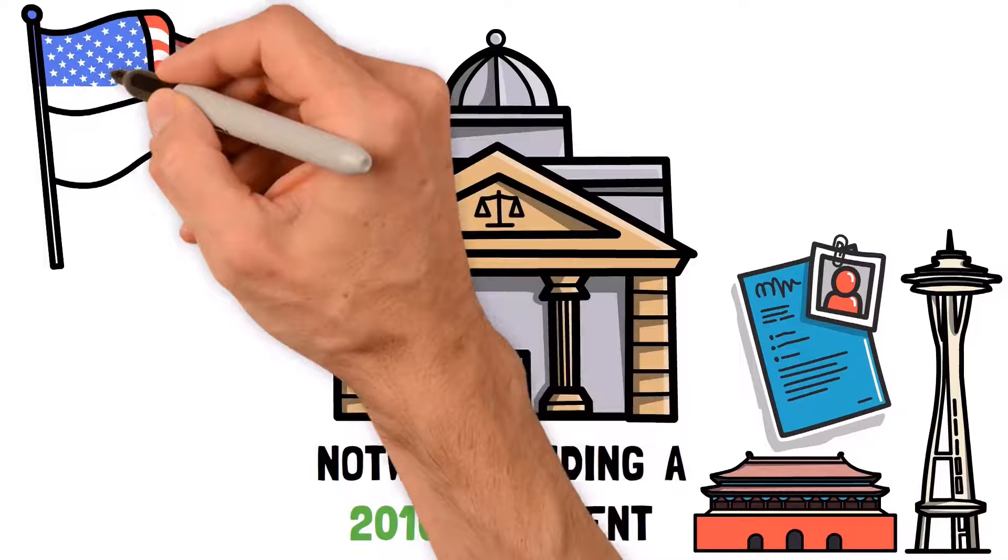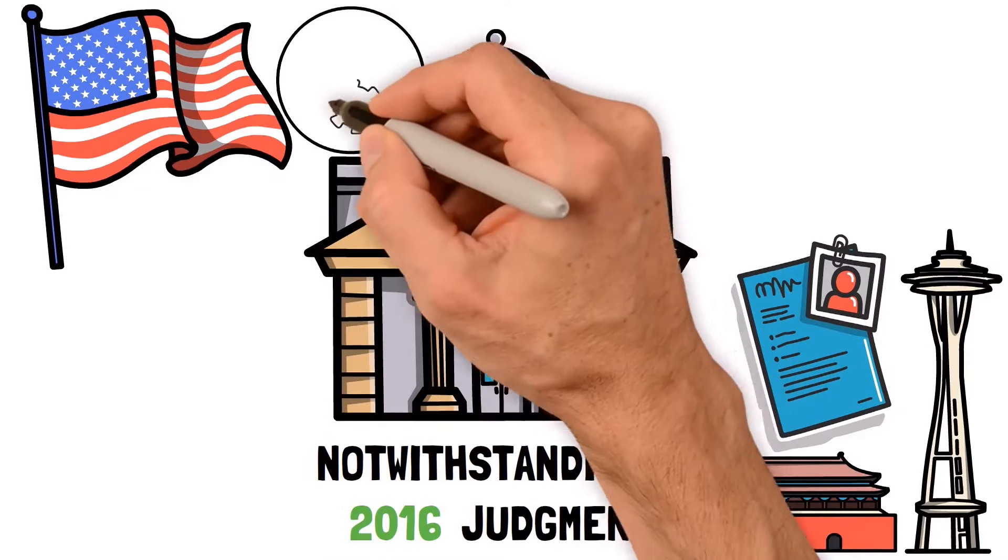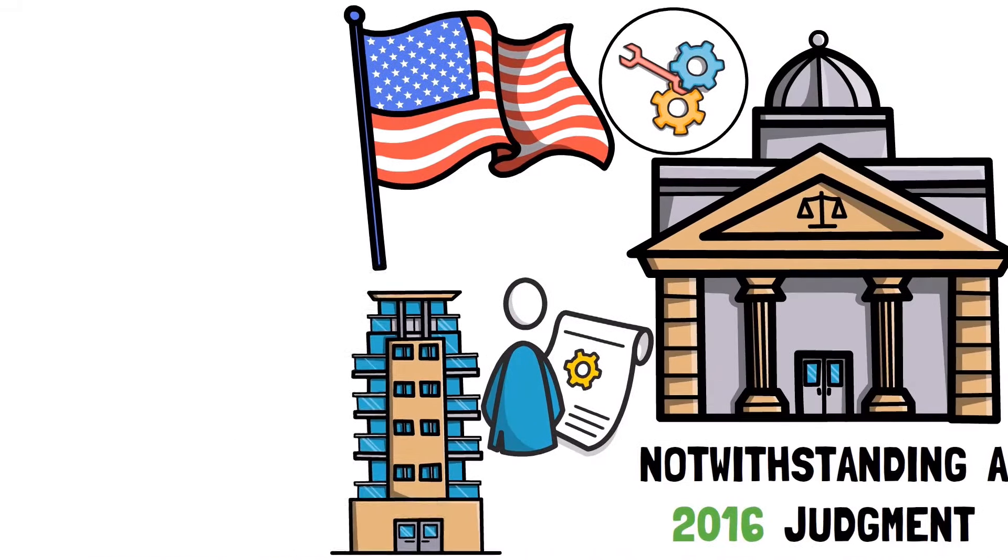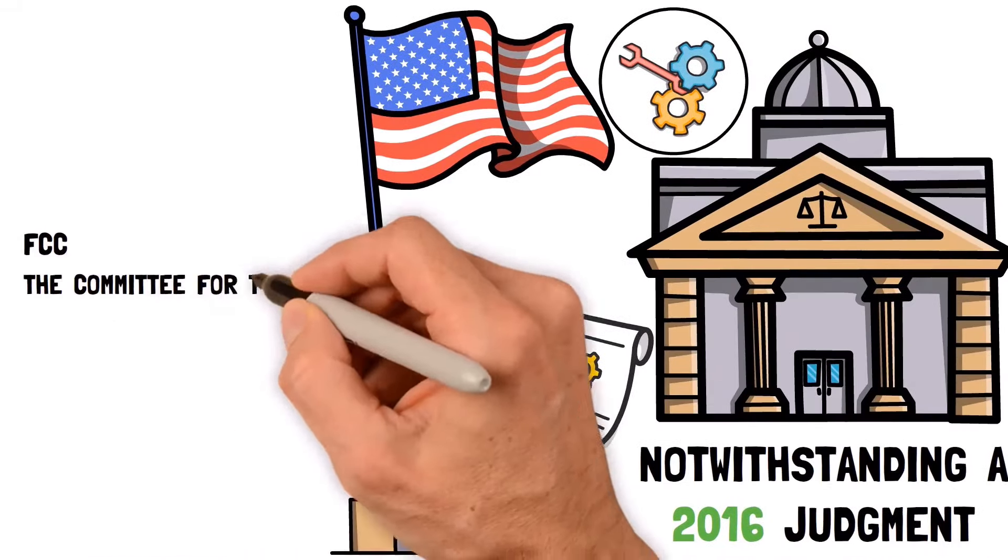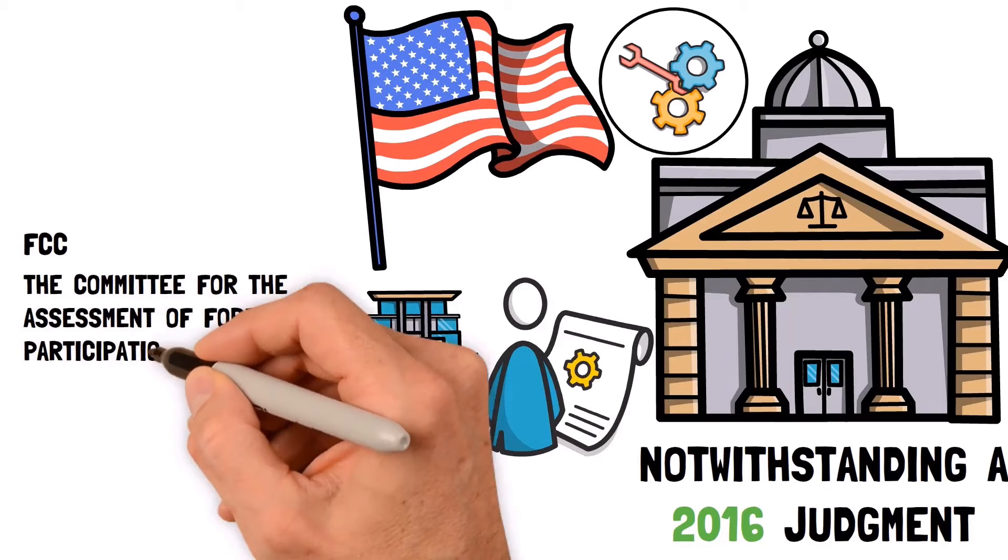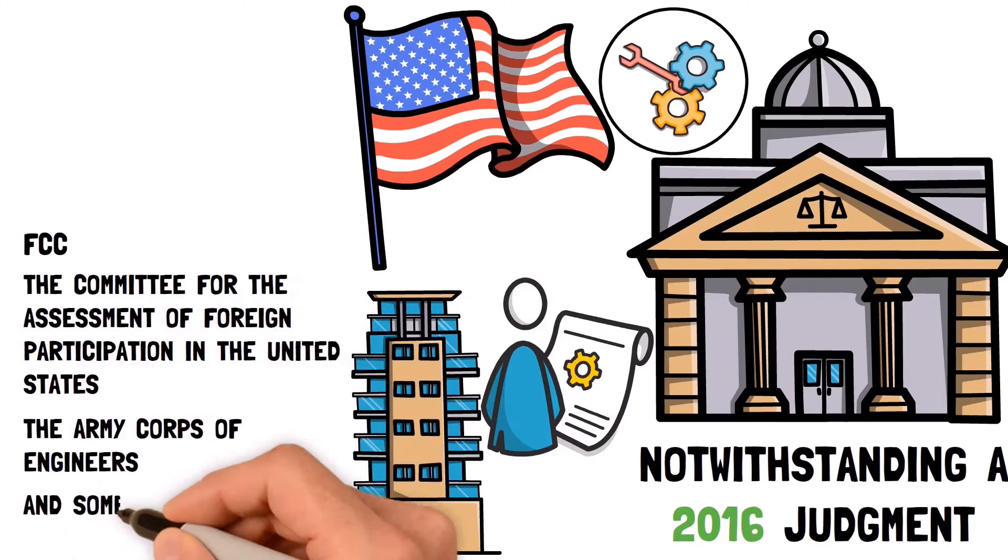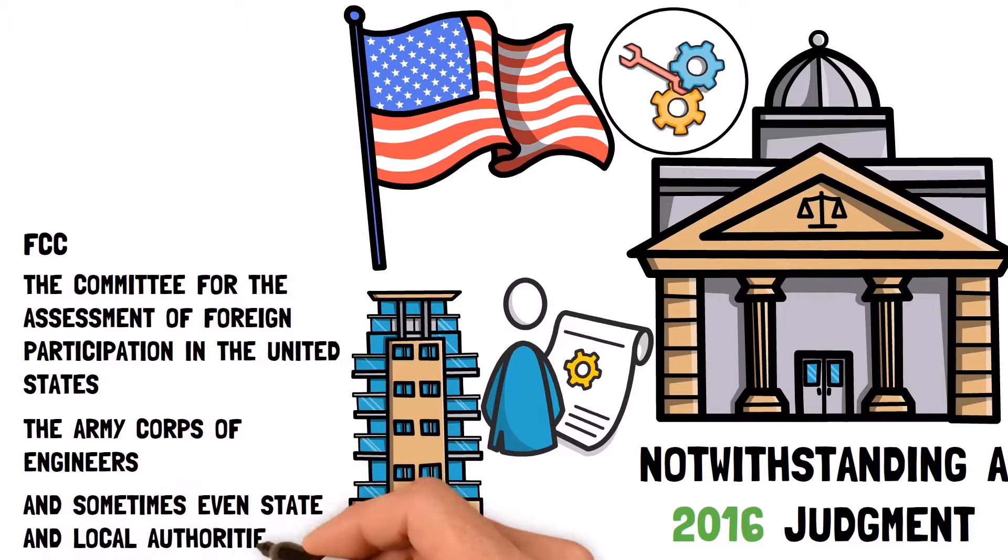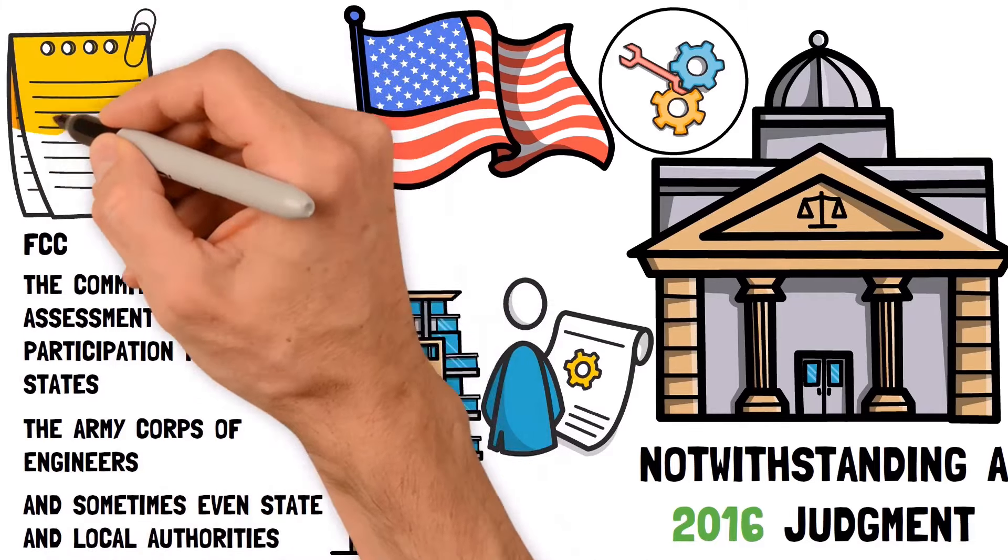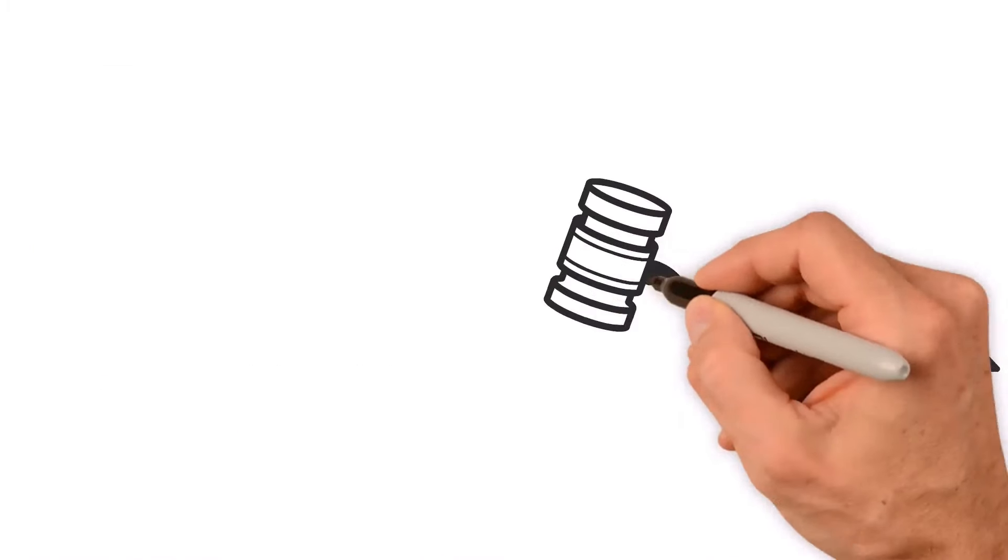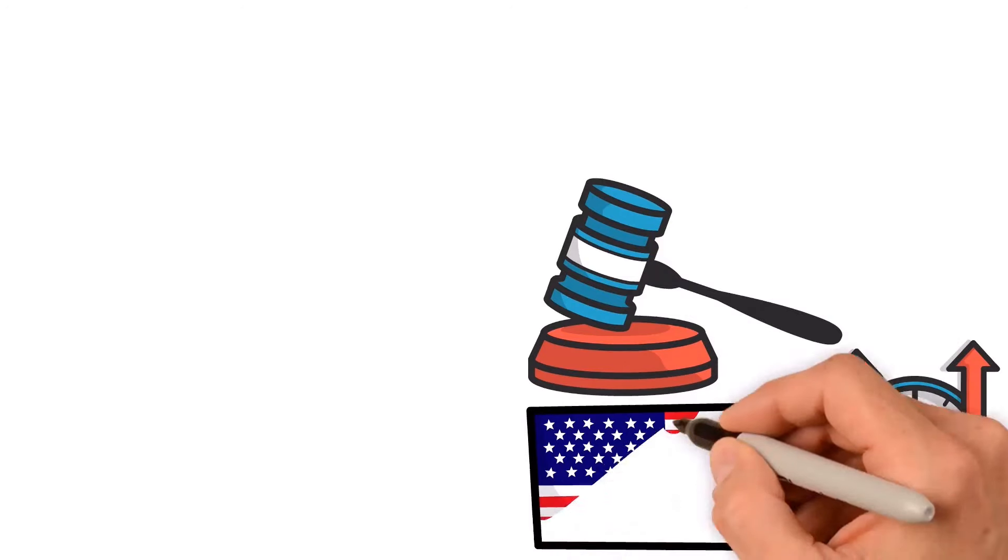Getting permission to work on cables in the US is a complicated process. Companies have to ask for approval from different groups like the FCC, the Committee for the Assessment of Foreign Participation in the United States, the Army Corps of Engineers, and sometimes even state and local authorities. Dealing with all this paperwork can slow things down by about two years. It might take even longer if a new law that restricts sharing cable technology in America gets passed.